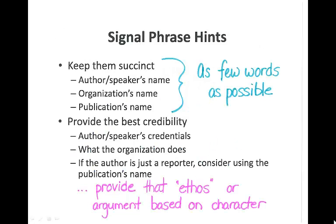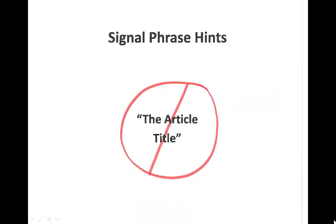One of the most important things is to keep your signal phrases to as few words as possible and make sure that you provide an argument based on the character of that source. In other words, tell us where it came from, why we should believe it, and do so as succinctly as possible. One of the biggest hints I can give you is don't include the article title in your signal phrase — it's generally just a long bunch of words that doesn't add anything to the credibility of the source, so just keep it out.